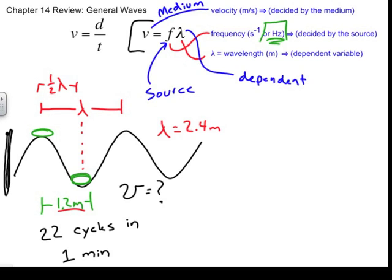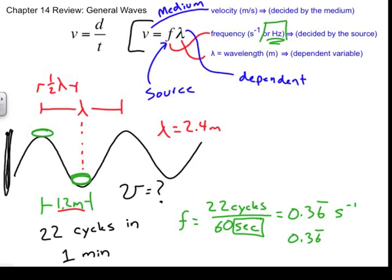I'm going to find that the frequency is equal to 22 cycles per 60 seconds. That's going to be 0.36 repeated, and I have inverse seconds. So that's s to the minus 1, which is also hertz. So this is 0.36 repeated Hz.